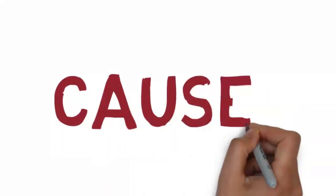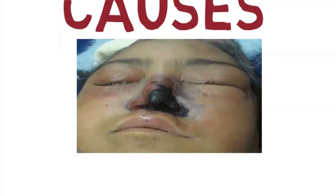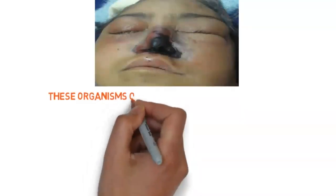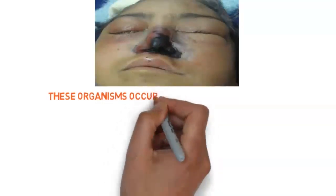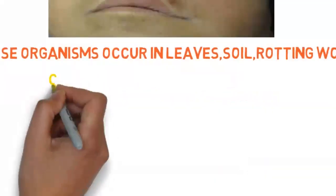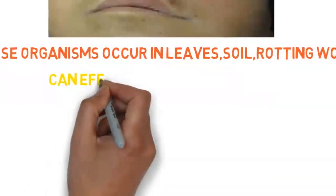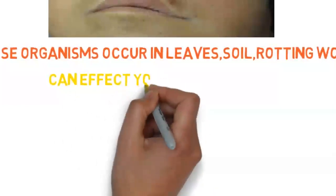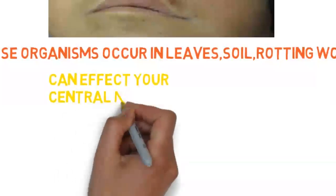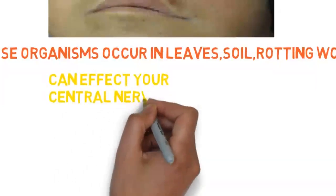Mucormycosis is caused by exposure to Mucor molds. These organisms occur in leaves, soil, and rotting wood. You can contract mucormycosis by breathing in affected mold spores in the air — this is referred to as sinus exposure. In turn, you may develop the infection in your sinuses or lungs.